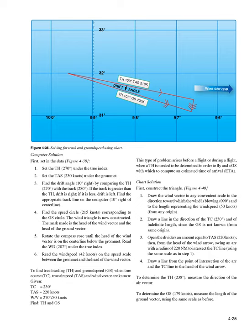This type of problem arises before or during a flight when a TH must be determined and a GS computed for an estimated time of arrival (ETA). Chart solution — construct the triangle (Figure 4-41): 1. Draw the wind vector in the direction toward which the wind is blowing — 090° — to a length representing wind speed (50 knots) from any origin. 2. Draw a line in the direction of TC (230°), of indefinite length since GS is unknown, from the same origin. 3. Open the dividers to an amount equal to TAS (220 knots), then from the head of the wind arrow, swing an arc to intersect the TC line. 4. Draw a line from the intersection to the head of the wind arrow. Measure TH (238°) and GS (179 knots).